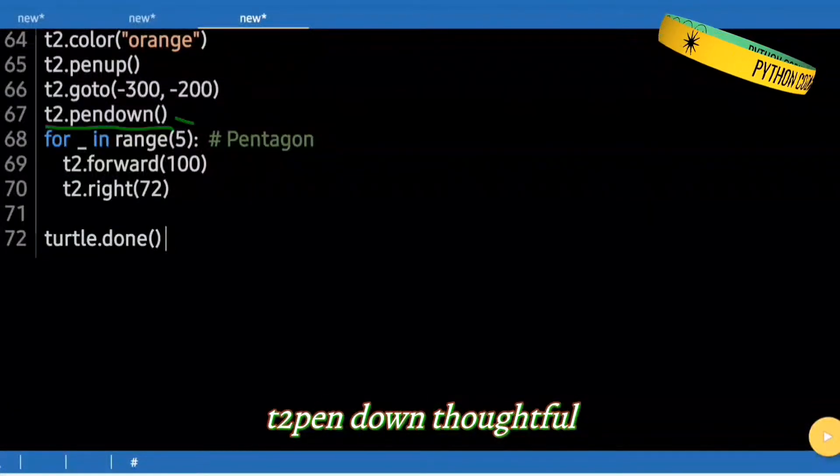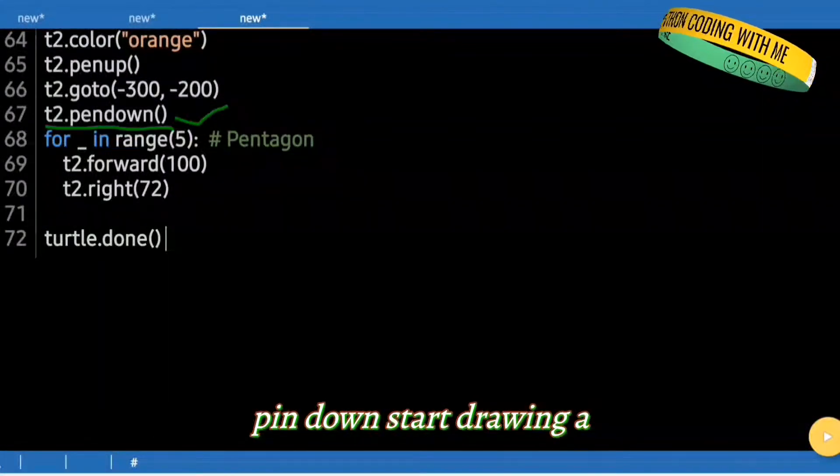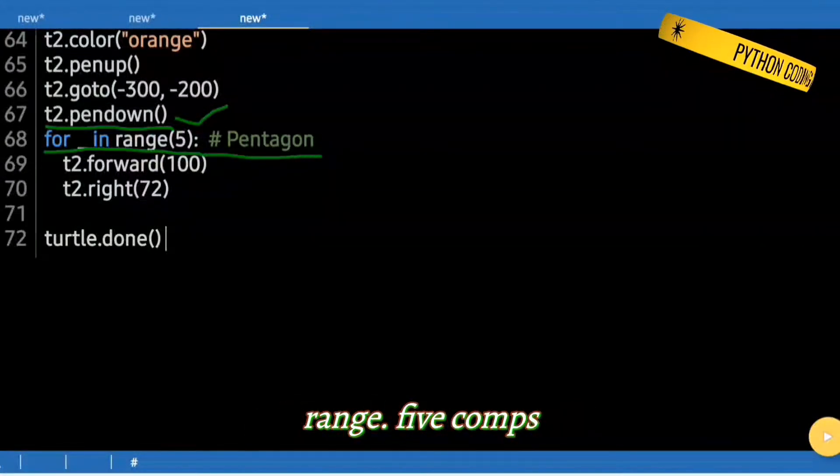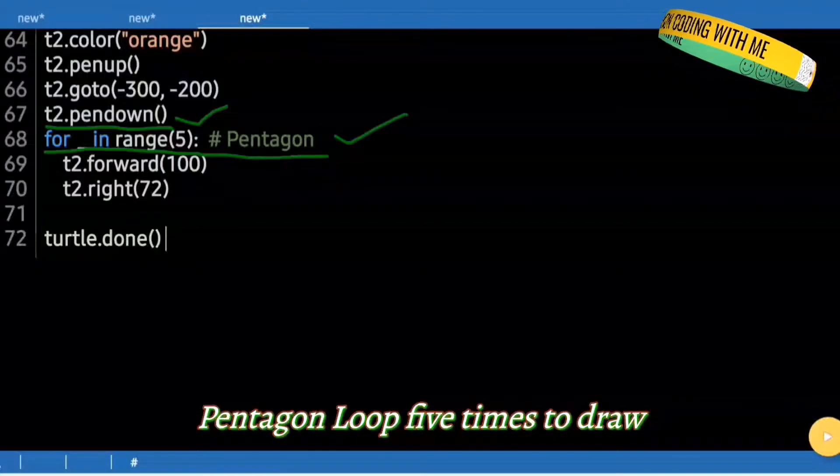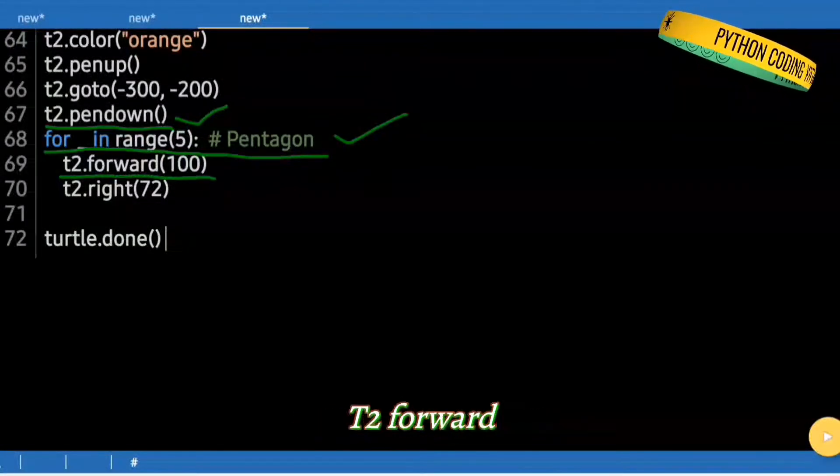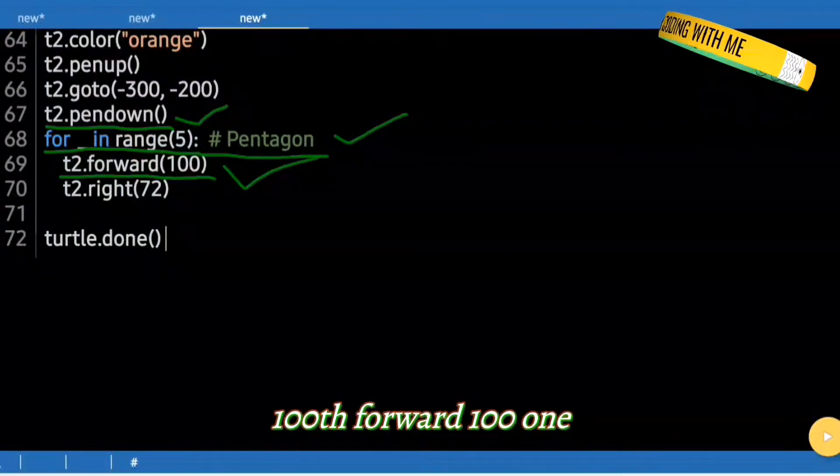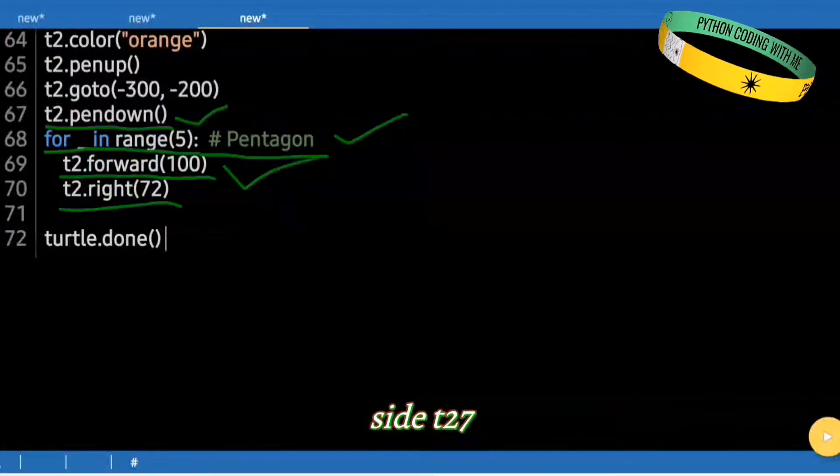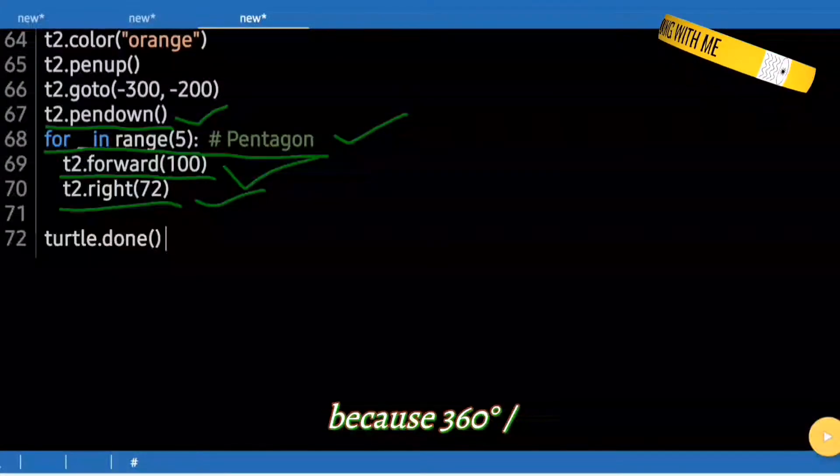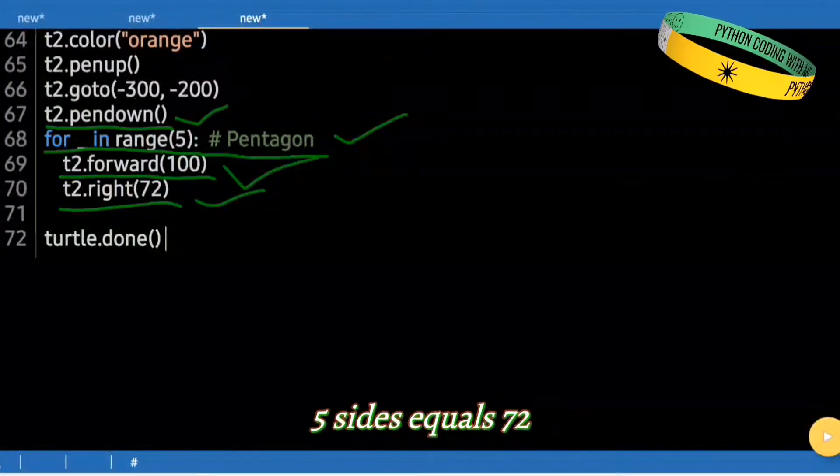t2.pendown(). Start drawing a polygon. Pentagon. for _ in range(5): Loop five times to draw a regular Pentagon. t2.forward(100). Forward 100, one side. t2.right(72). Turn right 72 degrees. Because 360 degrees divided by five sides equals 72.